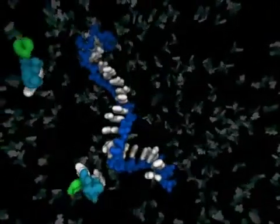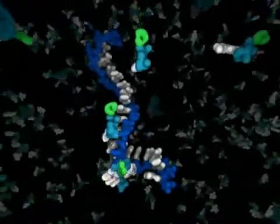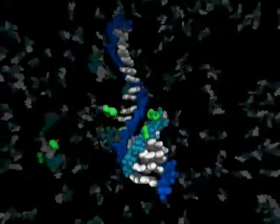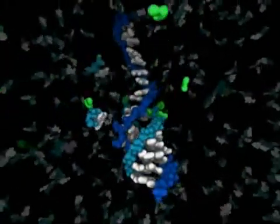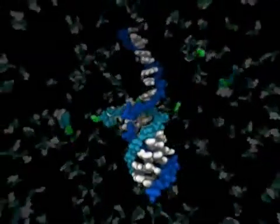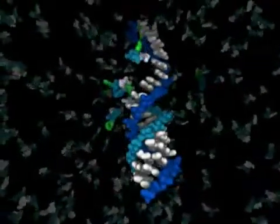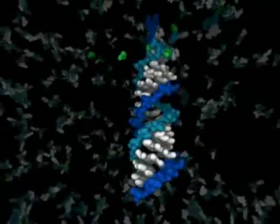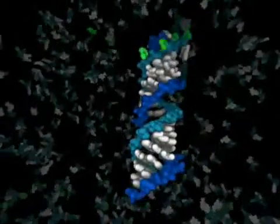This animation shows a mechanism by which RNA is replicated in a non-enzymatic manner. Single nucleotides find their complementary base on the template strand, and undergo a chemical reaction to form a polymer. This reaction is possible because the nucleotides have been chemically activated so as to increase their reactivity.